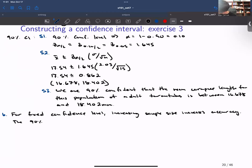So that means that the 90% CI for N equals 30 will be more accurate than the 90% CI when N equals 15.